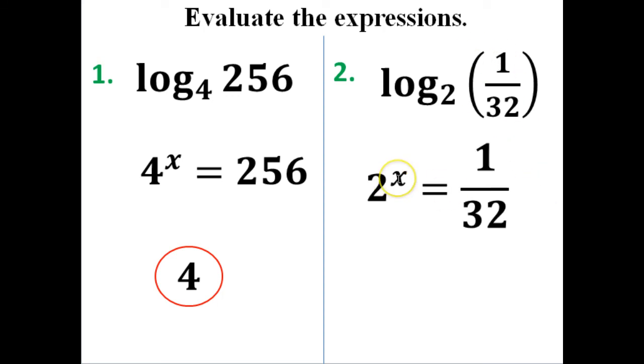So 2 to the x—you can just leave that blank if you want—but we've got to think about 2 to the what equals 32. We know that 2 to the 5th power would equal 32. The problem is here we have 1 over 32. So if it's 1 over something, that means this exponent is going to be negative.